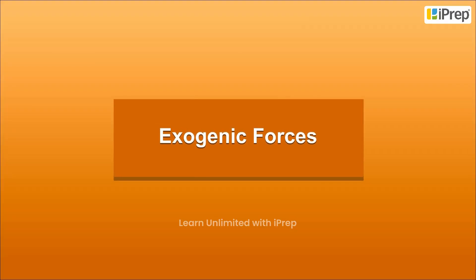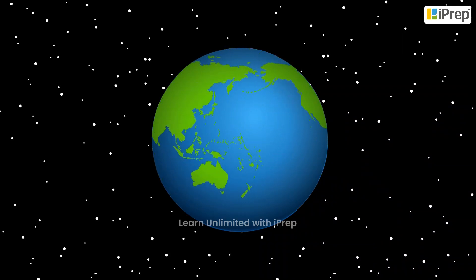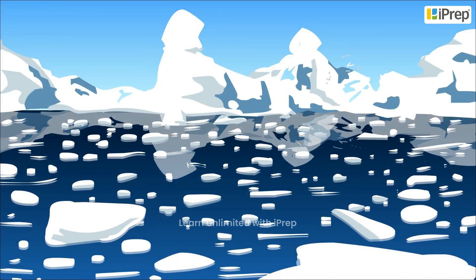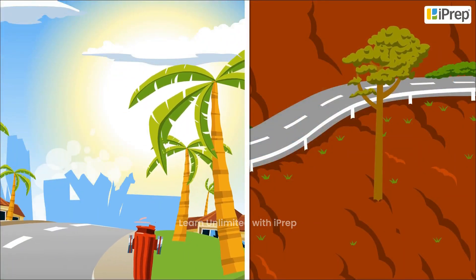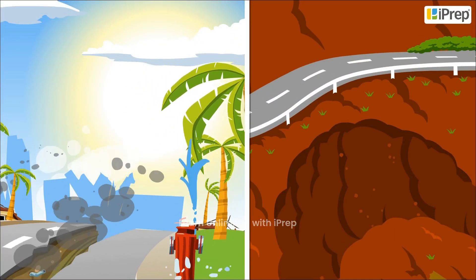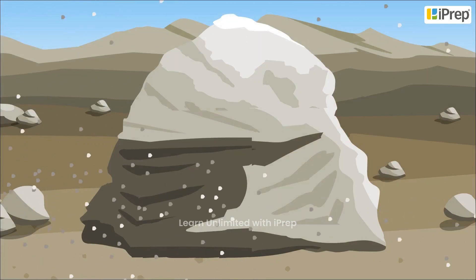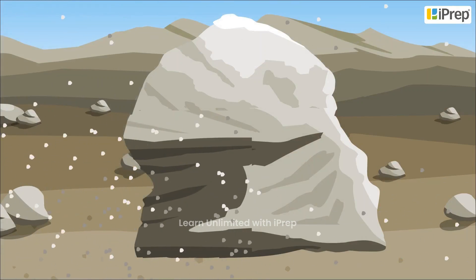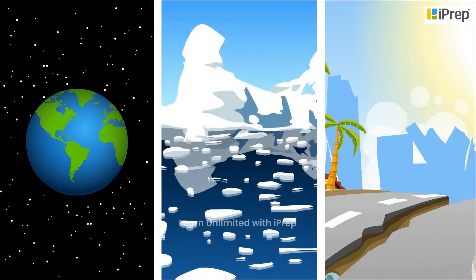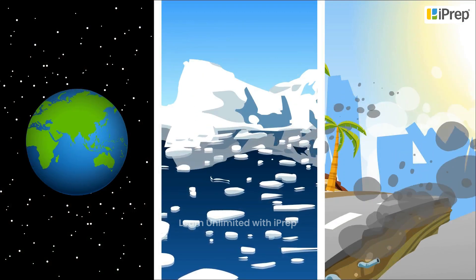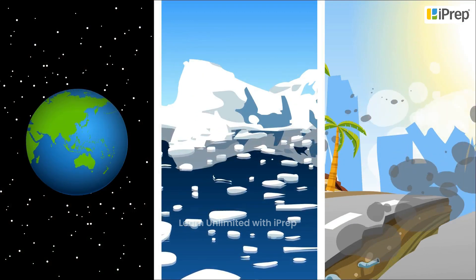Exogenic Forces. Our earth is constantly changing, with its landscape too changing. The changes that happen quickly are visible to us immediately, while the ones that happen slowly change the landscape over time. These changes or evolution of landforms are brought about by several earth movements.